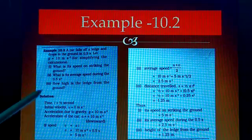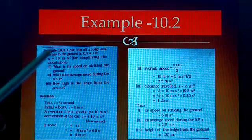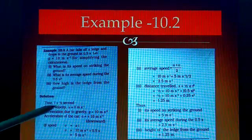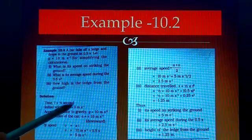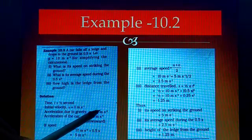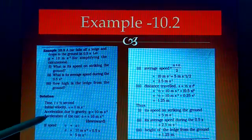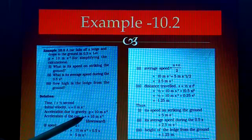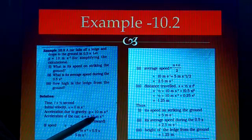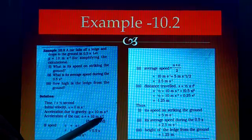First, we can write the terms which are given. Time is given as 0.5 seconds. Initial velocity we can take as 0. Acceleration due to gravity is g = 10 m/s². Then acceleration of the car A, we can take as positive +10 m/s².